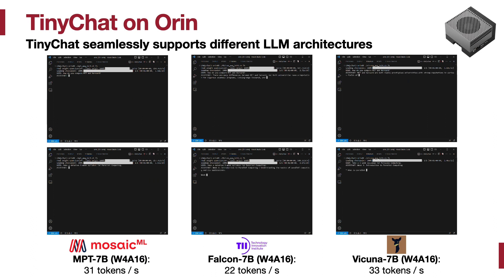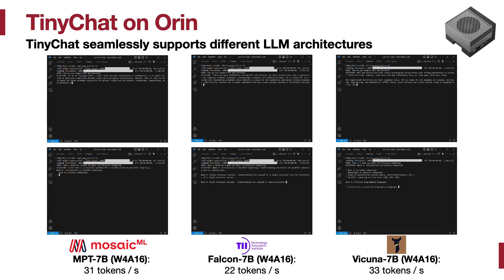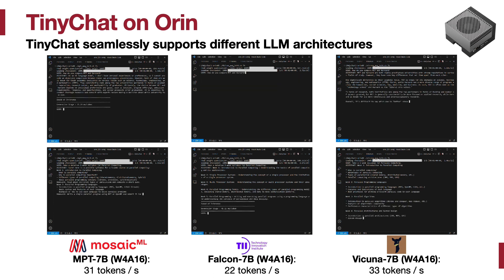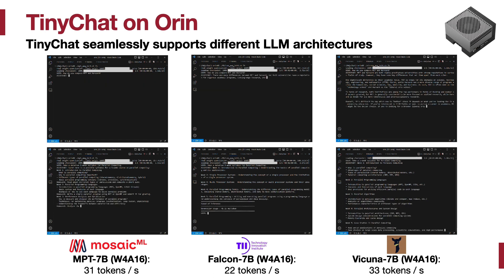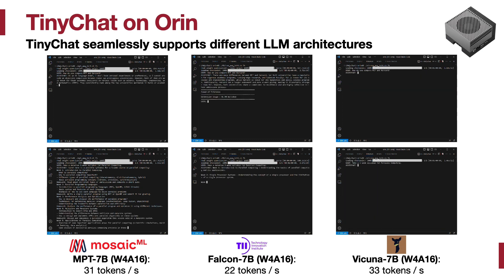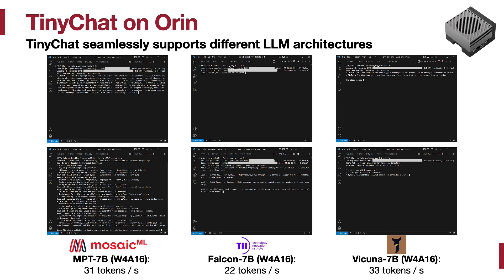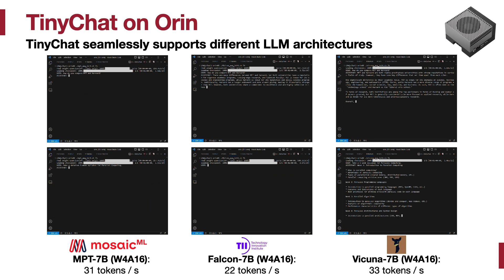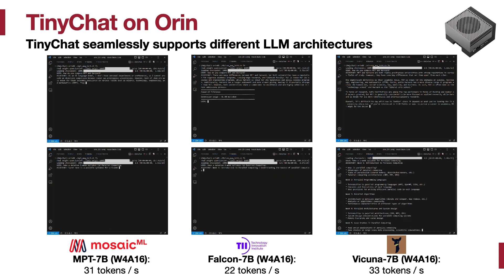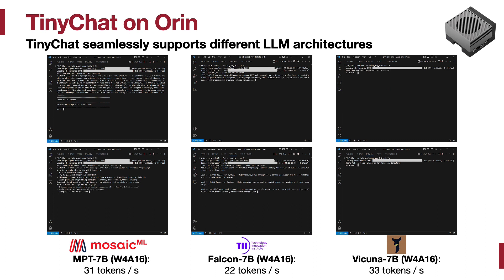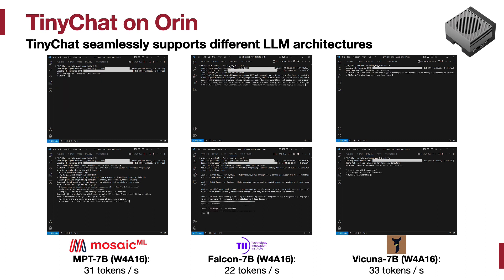Furthermore, generalization is our first design principle. TinyChat is designed to support different large language model architectures with only Python-level code changes. For example, we are able to run the MPT 7 billion model from MosaicML at 31 tokens per second. The Falcon 7 billion model with multi-query attention from TII also runs smoothly with TinyChat at 22 tokens per second. TinyChat also runs Vicuna 7 billion from UC Berkeley at 33 tokens per second.